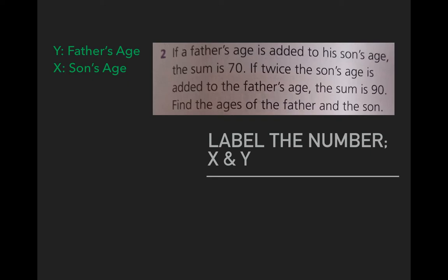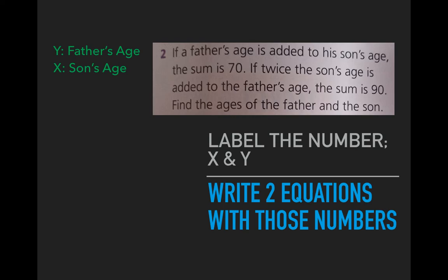We now want to look at the equations. The equations are separated by the full stop at the end of the first sentence. So let's take the first sentence. Father's age is added to son's age. So that's y + x when we add them together, and it gives us 70. So y + x = 70, or x + y = 70.